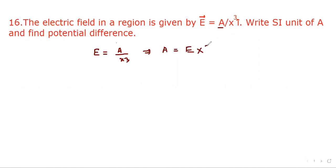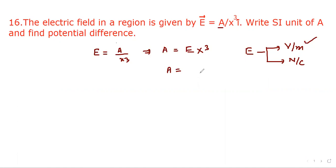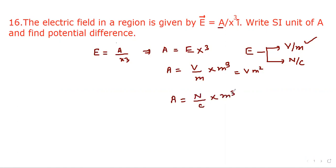Now electric field has unit either volt per meter or newton per coulomb. So a will have unit: taking volt per meter gives volt per meter multiplied by meter cube, which gives volt times meter squared. If we take newton per coulomb for electric field, then it becomes newton times meter squared per coulomb. These are the two units of a.